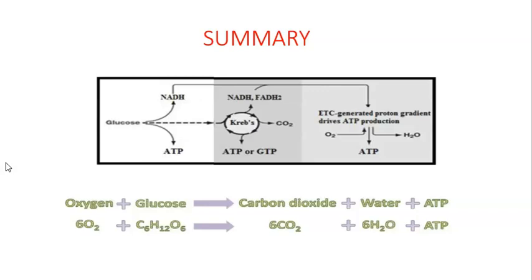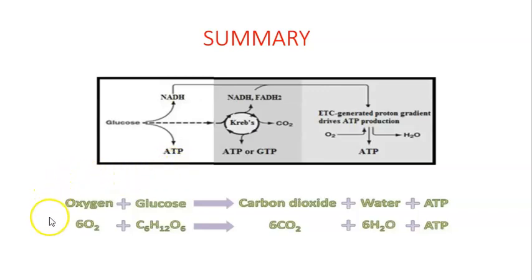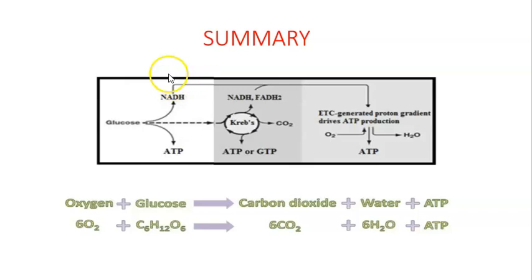To summarize, cellular respiration has three main steps: glycolysis, Krebs cycle, and oxidative phosphorylation. These three steps are necessary to transform oxygen and glucose into carbon dioxide, water, and ATP. Glycolysis is anaerobic, while the Krebs cycle and oxidative phosphorylation are aerobic.